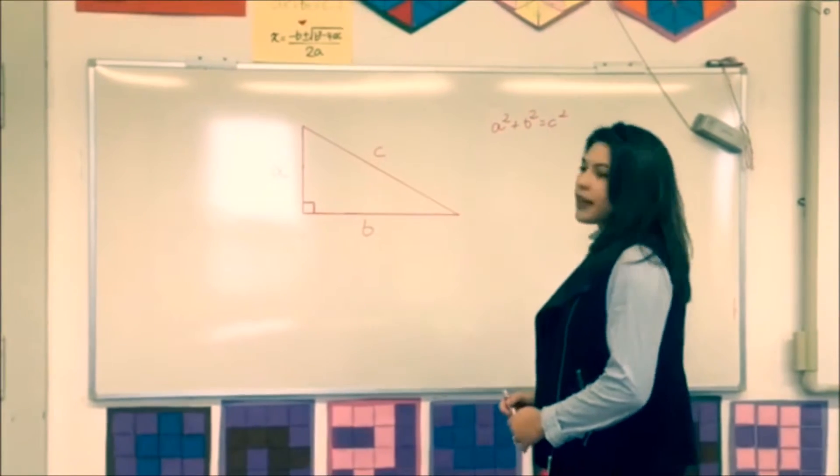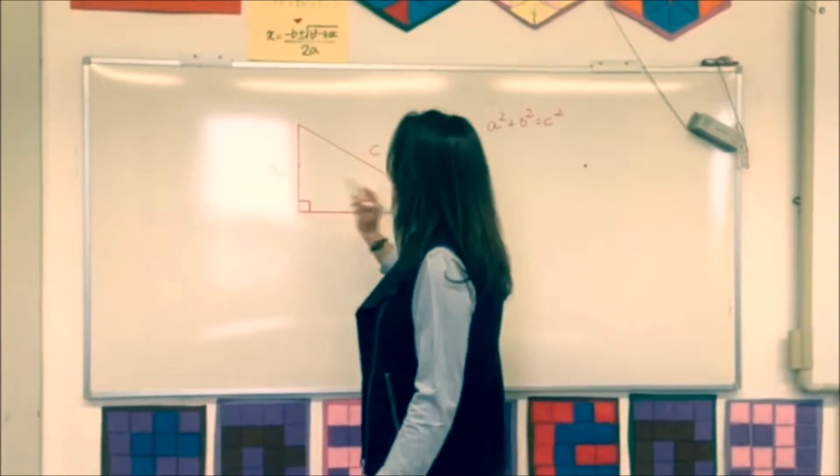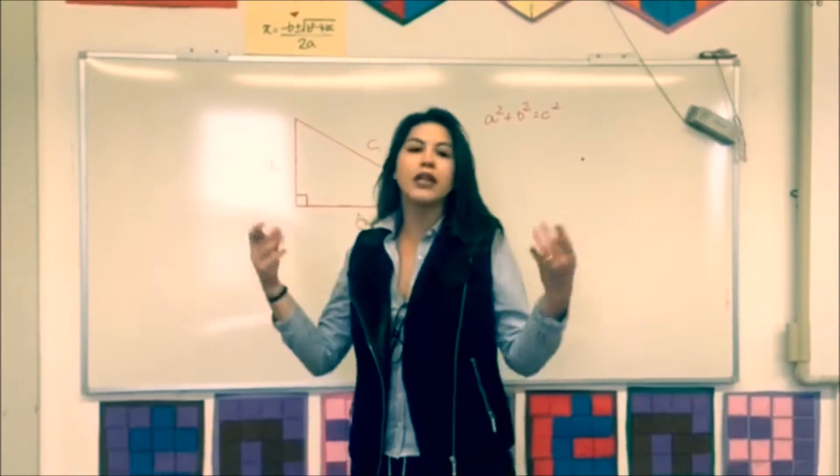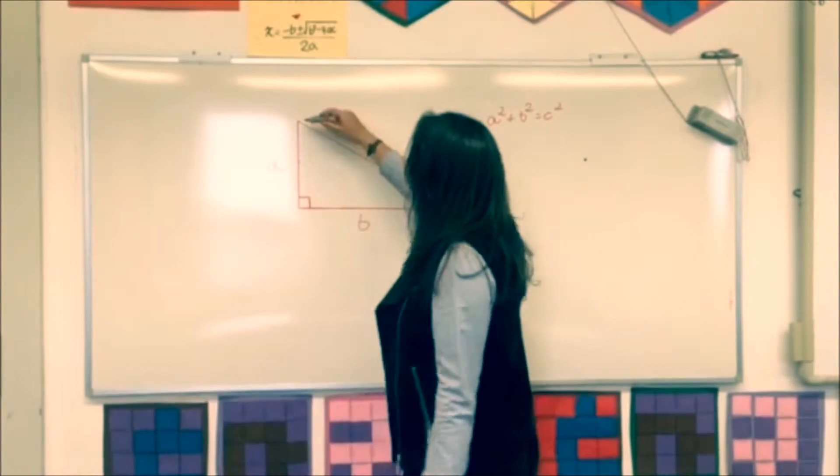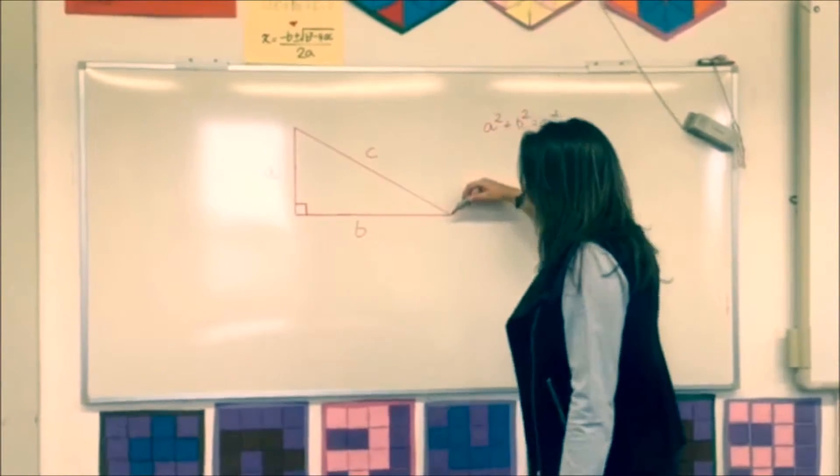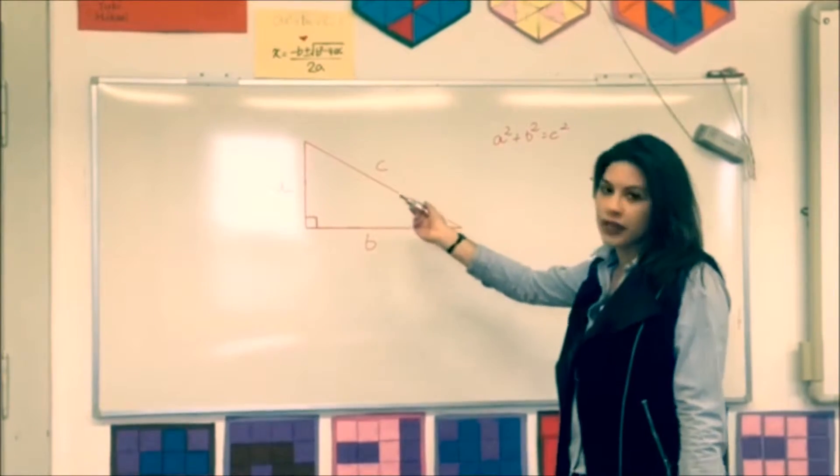Most of the time, we use it to find the hypotenuse. What is the hypotenuse? The hypotenuse is the longest side. In this case, it's letter C.